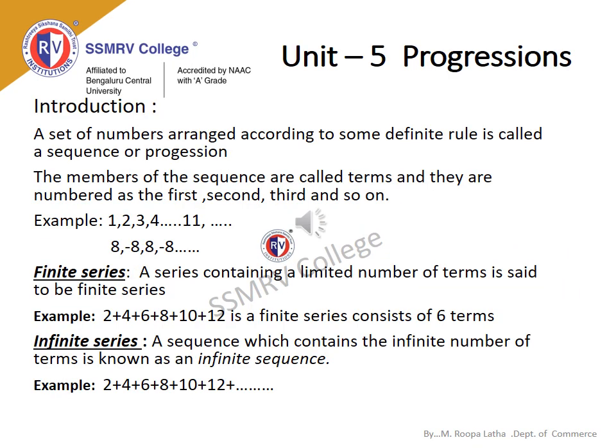Unit 5: Progressions. What is a progression? A set of numbers arranged according to some definite rule is called a sequence or progression. The members of the sequence are called terms and they are numbered as 1st, 2nd, 3rd, 4th, and so on. For example: 1, 2, 3, 4, 5, 6 and so on; or 11 and so on.